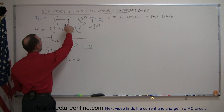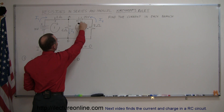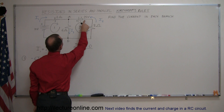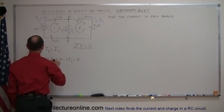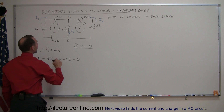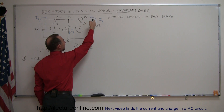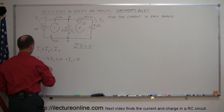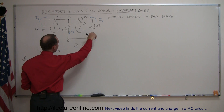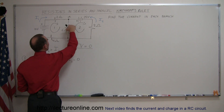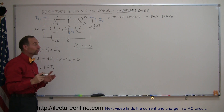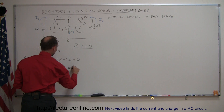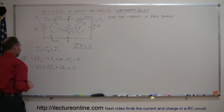For loop number 2, starting from A and going clockwise: I go across this battery from the plus to the minus end — that's a voltage drop of minus 15 volts. Then I come to this resistor and go across it against the current, which means a voltage rise — plus 8 times I2. Then coming from B back to A, I go across this resistor against the current, so that's again a voltage rise: plus 6I3. Back to where I started, all those should add up to zero. That's the equation from loop number 2.